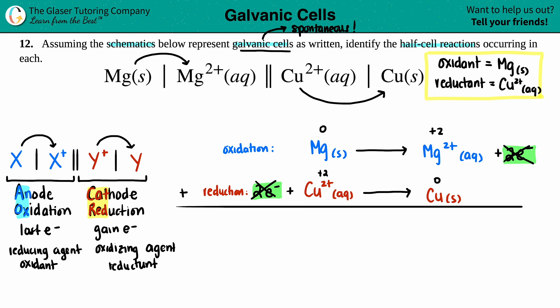And now anything that's on the left stays on the left, anything on the right stays on the right. So we have Mg solid plus your Cu²⁺ aqueous, and this will go to your Mg²⁺ aqueous plus your Cu solid.